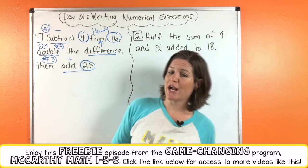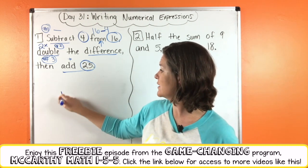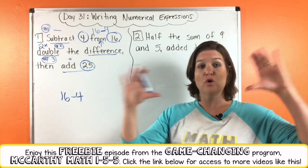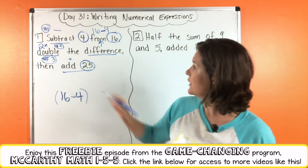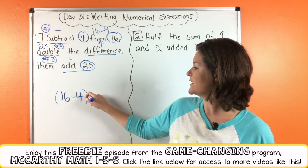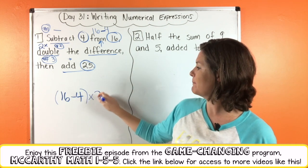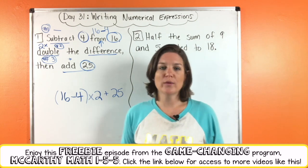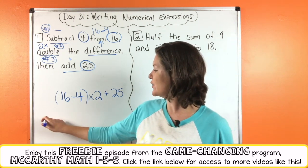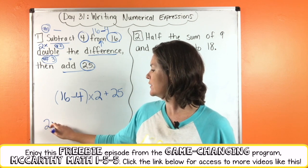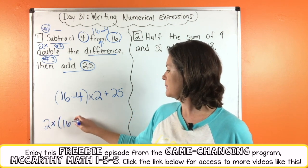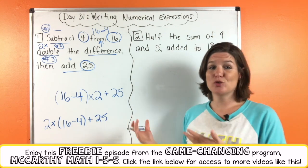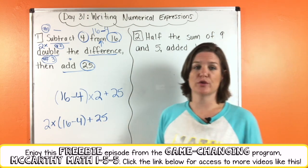So first we need to subtract 4 from 16, so I'm going to place 16 minus 4. To ensure we're doing it first, we throw parentheses around it. Then we're going to double the difference, so we multiply that by 2. And finally, we add 25. So this is one way you could write it. You could also write it as 2 times (16 minus 4) plus 25 — those are the two best ways without getting confused.